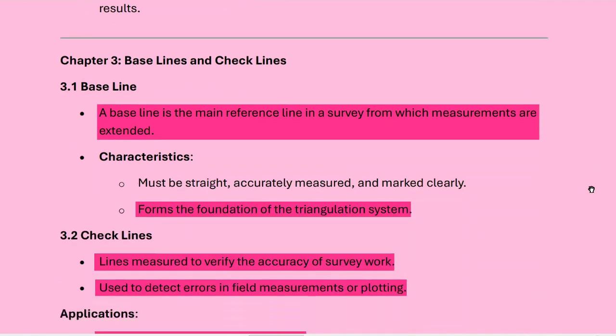Now come to some basic terms. What is a baseline? A baseline is the main reference line in a survey from which measurements are extended. Its main characteristics: it must be straight, accurately measured, and clearly marked. It forms the foundation of the triangulation system.